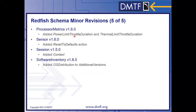In processor metrics, reporting has been added for how much time the processor has been throttled due to power limitations or thermal/temperature limitations. Another reset to defaults is available there. In session, a context property was added so the service can explain in the session collection where a session is being created from — whether from a user, an application, or some other source. This is useful for an administrator looking at all active sessions on a service to understand not just the user or IP address, but the context of that connection.